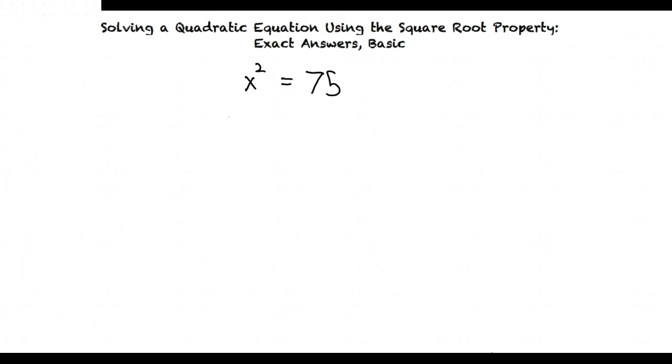Would I take the square root of both sides? Exactly. Let's take the square root of both sides to get x equals square root of 75.